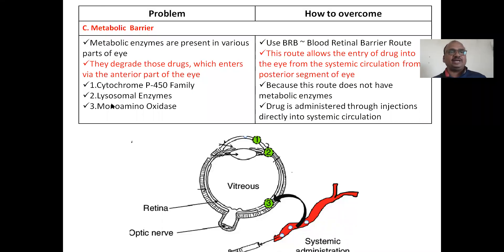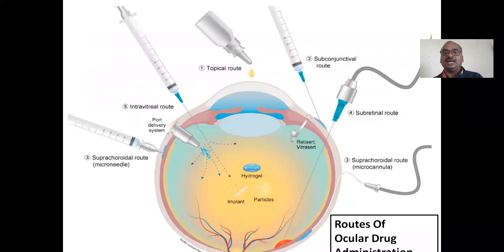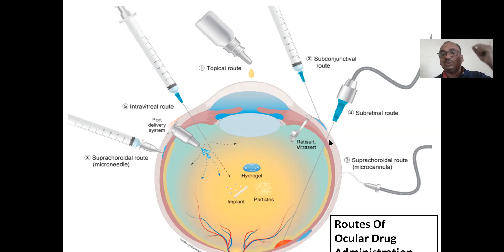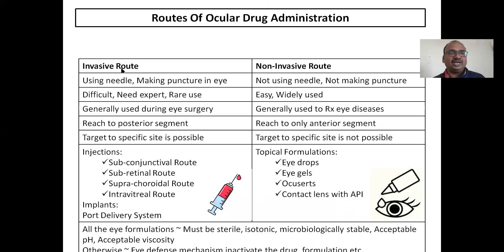Regarding routes of ocular drug administration, there are a number of routes. The invasive route involves injection — you need a needle to puncture the eyeball and require an expert. The non-invasive route is simply the topical route — no needle, no puncture — and it is easy and very widely used. Examples of invasive routes include subconjunctival, subretinal, suprachoroidal, and intravitreal injections.